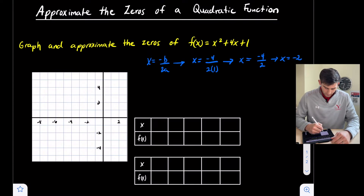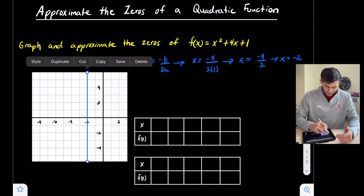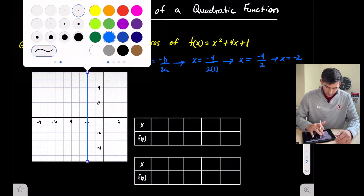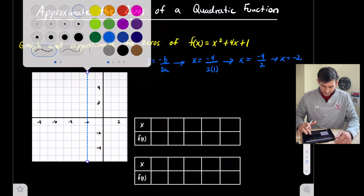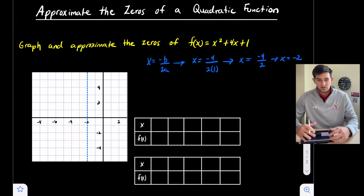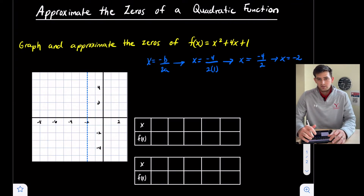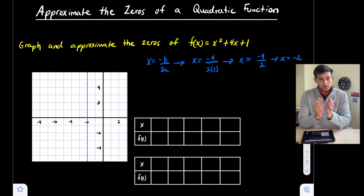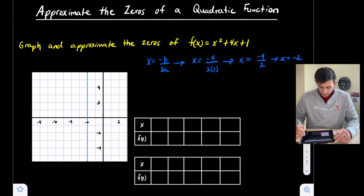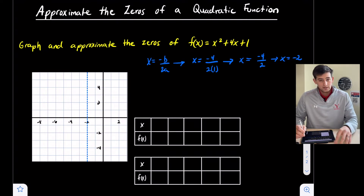Now we can put our axis of symmetry, which is a vertical dashed line at x = -2. It's where we could fold our parabola over. Now let's take x equals negative 2 and find the y-coordinate of our vertex.